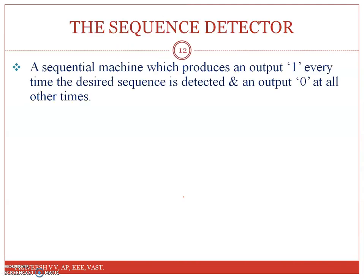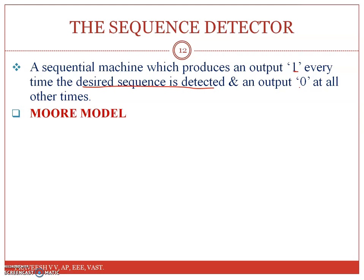Basically, a sequential detector or a sequence detector is a sequential machine which produces an output one only when the desired sequence is detected. It will output a one when the desired sequence is detected, otherwise it will output a zero. You already know this, and the steps remain the same for the Moore model as well.